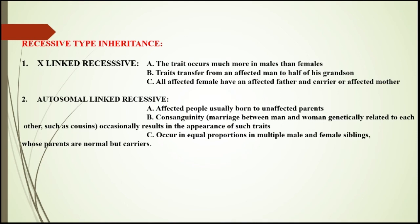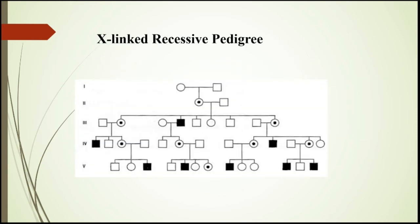Next is autosomal recessive. Affected people are usually born to unaffected parents. Consanguineous marriage generally gives rise to this type of inheritance. The affected males and females occur in equal proportion among siblings.